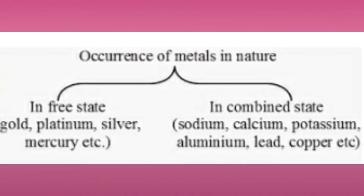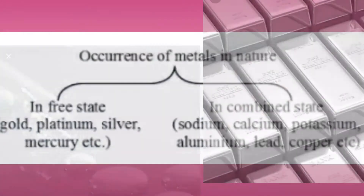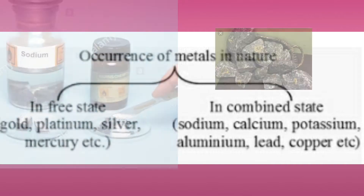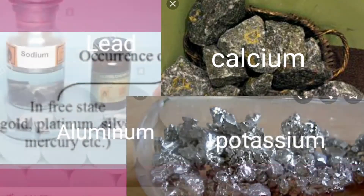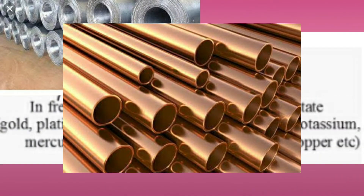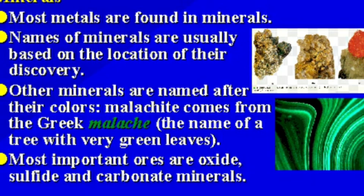Metals occur in nature in two forms: in the free state as well as in the combined state. Some metals occur in the free state, like gold, platinum, silver, and mercury. Other metals like sodium, calcium, potassium, aluminium, lead, and copper occur in the combined state. Most metals are found in the form of minerals.